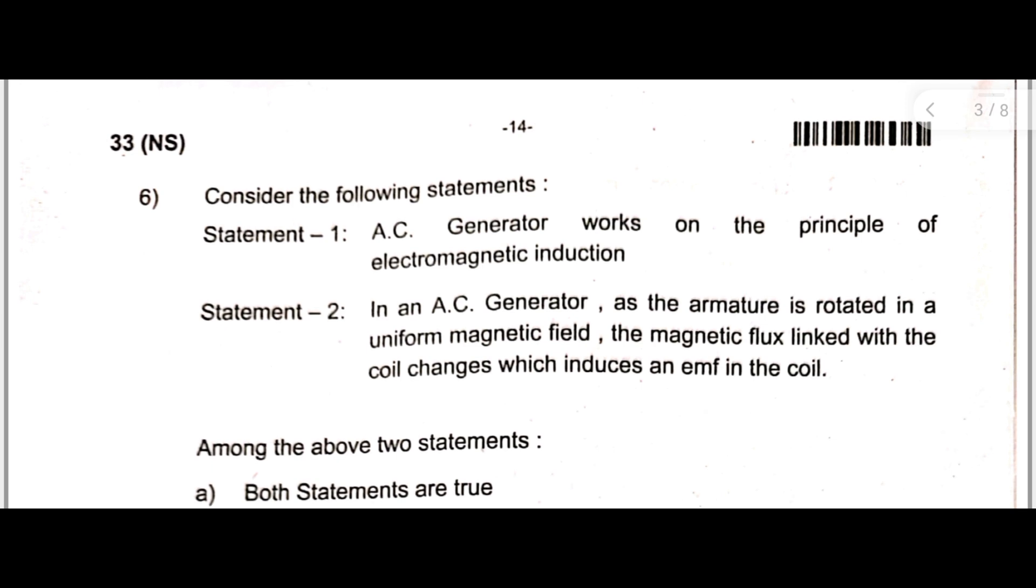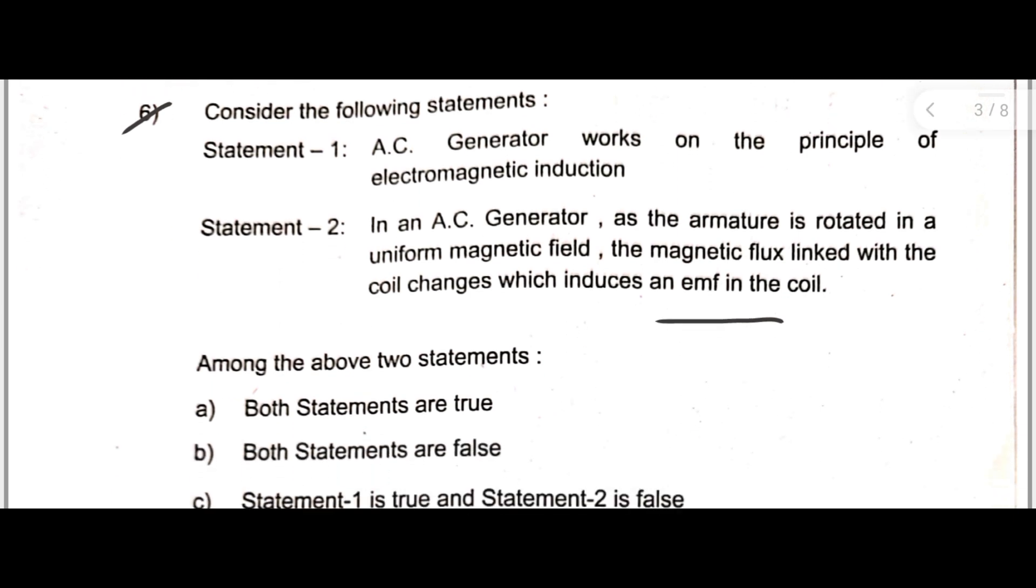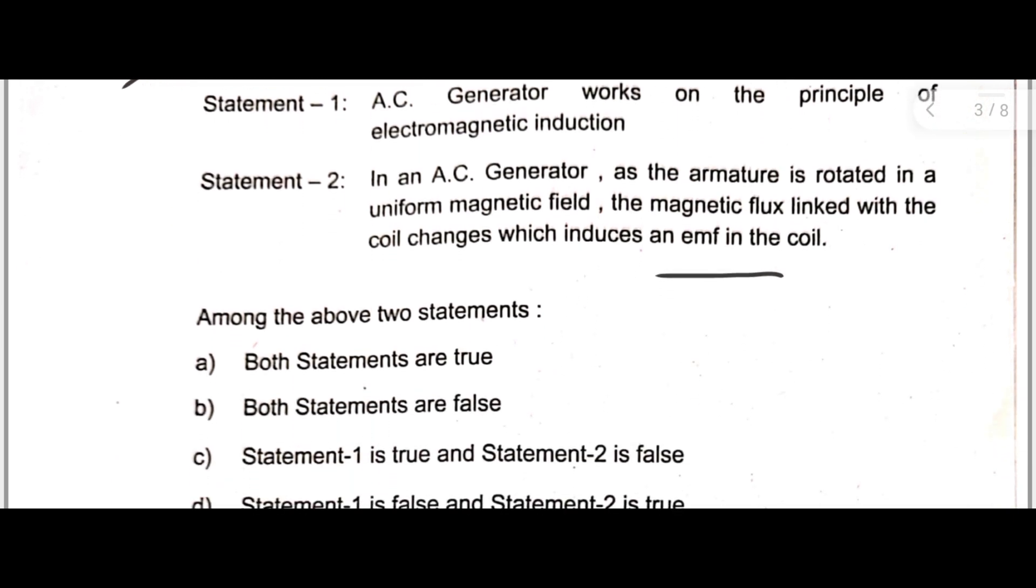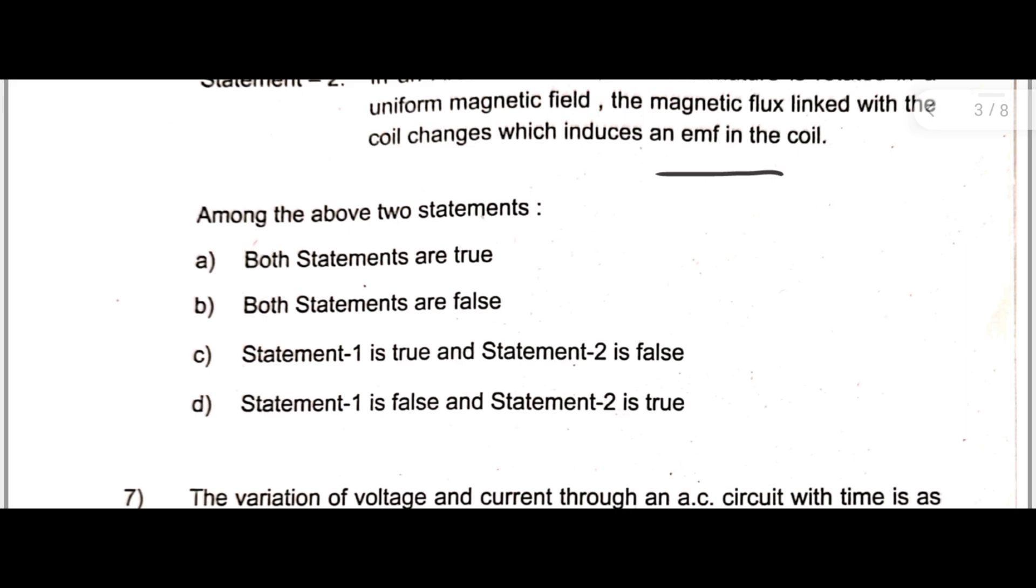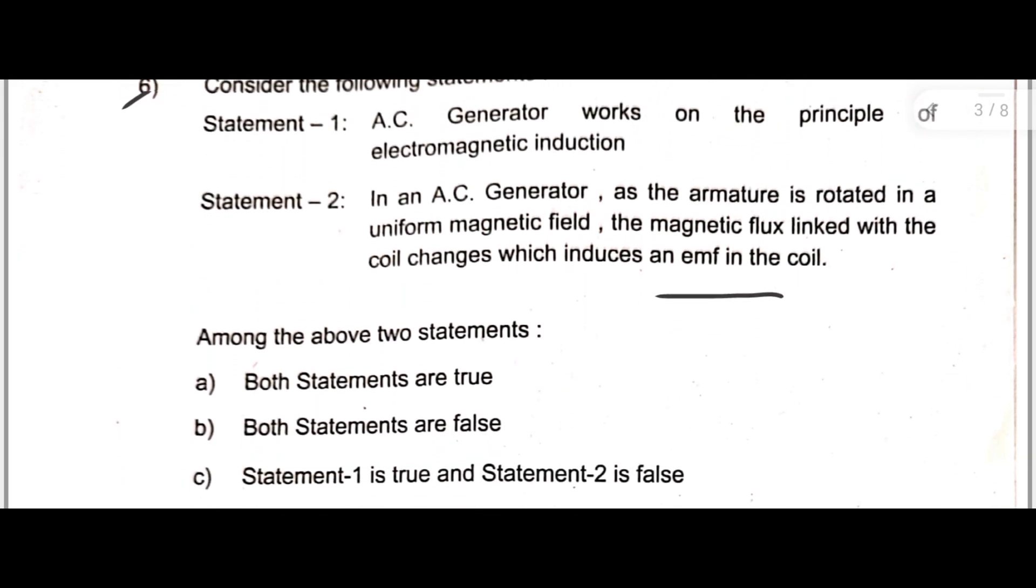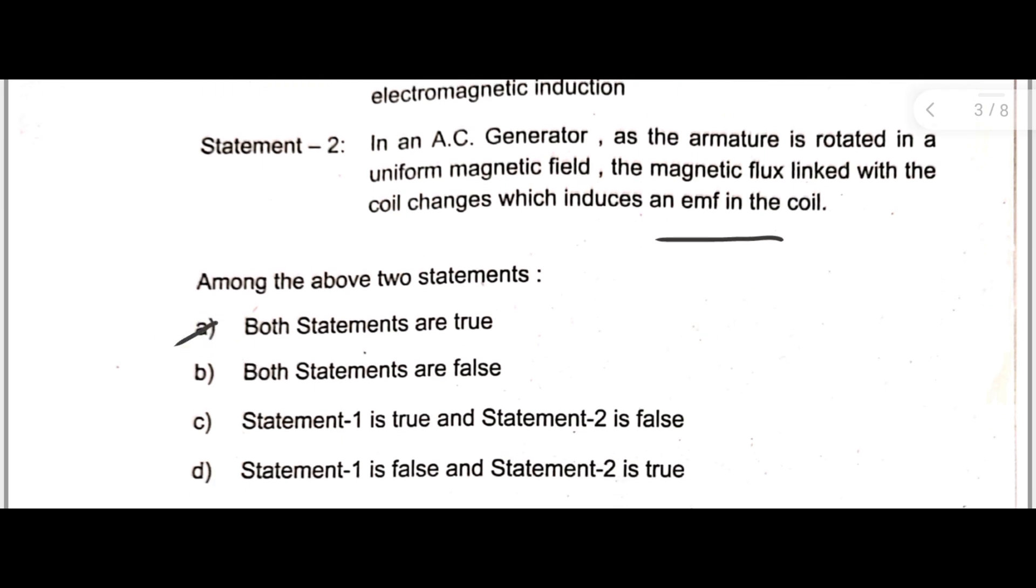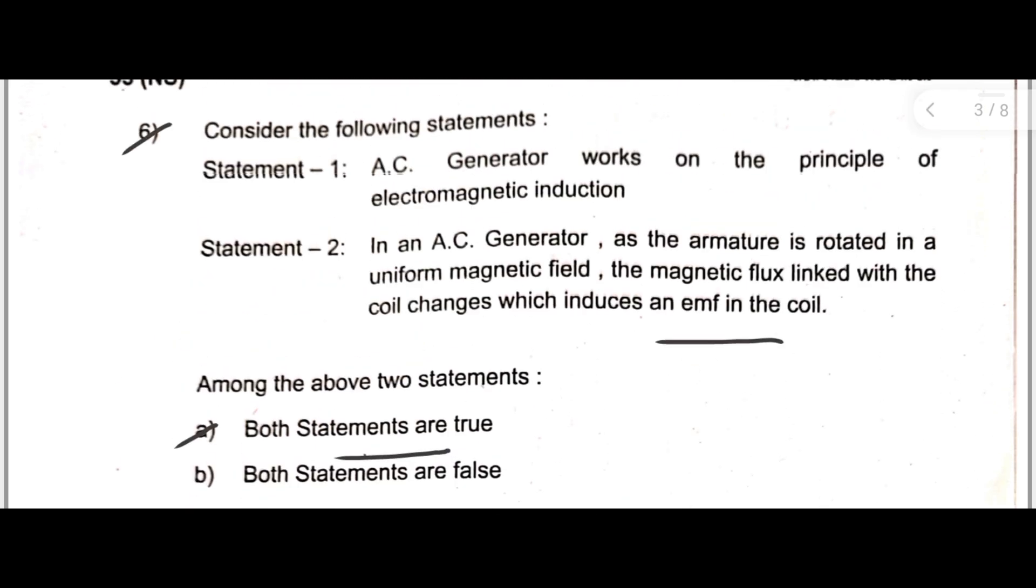Next, question number six. Consider the following statements: Statement one - AC generator works on the principle of electromagnetic induction. Statement two - in an AC generator, as the armature is rotated in a uniform magnetic field, the magnetic flux linked with the coil changes, which induces an EMF in the coil. Among the above two statements, which one is correct? Here option A is correct: both statements are true.